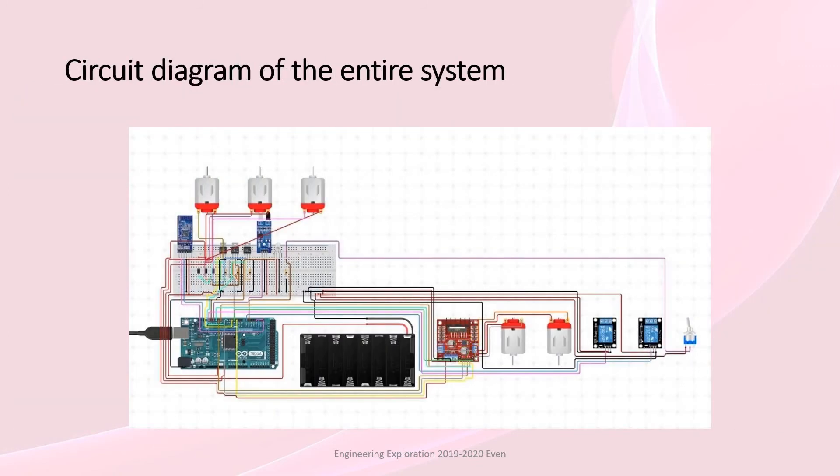This is the circuit diagram. We use the circuit.io platform. Five motors, three for brushes, two for wheels, two IR sensors, one LED, one Arduino megabolt, one driver module, two relays, and a breadboard.